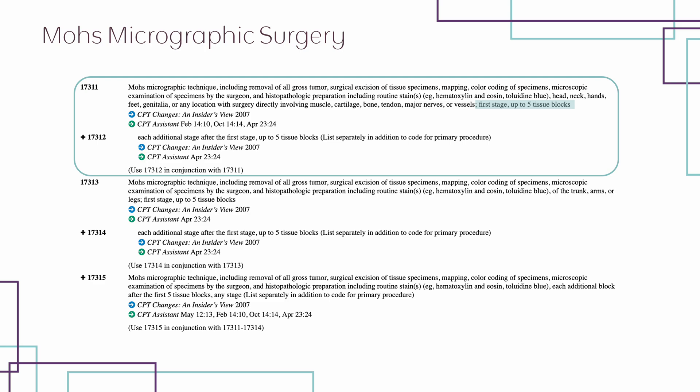Going back to the code set, code 17311 is for the first stage up to five tissue blocks. Since the first stage only had four blocks, we will report 17311. For the second stage, it is important to note that we should not report another unit of 17311. Instead, we use add-on code 17312 for the second stage.